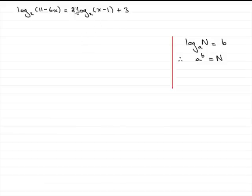Well, we've got a log term here. So what I'm going to do is first of all, subtract this term here, 2 log of x minus 1 in base 2 from both sides. So therefore we get log base 2 of 11 minus 6x minus 2 log base 2 of x minus 1 equals 3.